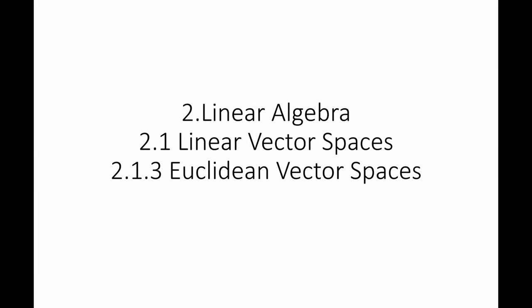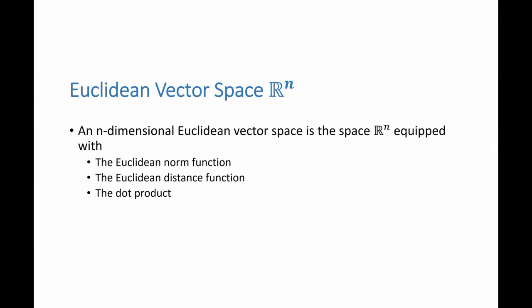In the next video, we are going to discuss the Euclidean vector spaces. Euclidean vector spaces are n-dimensional vector spaces equipped with the Euclidean norm, as defined before, the Euclidean distance, or metric function, as defined before, and the dot product between vectors. And remember that for every x in Rn, we have the equality x dot x, which is the dot product, is also equal to the norm of x squared, basically relating the dot product with the norm function.